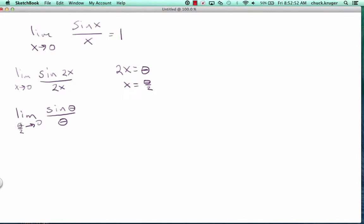Because as theta/2 gets smaller and smaller, theta is also getting smaller and smaller. So this would be 1 because it's in this particular form.